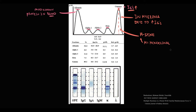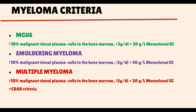The presence of less than 10% of malignant clonal plasma cells in the bone marrow that produce less than 3 g per deciliter of monoclonal immunoglobulins is called monoclonal gammopathy of unknown significance (MGUS).